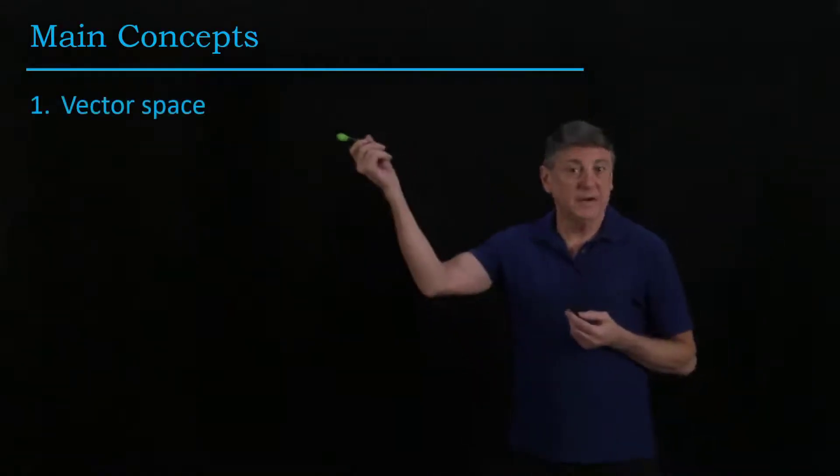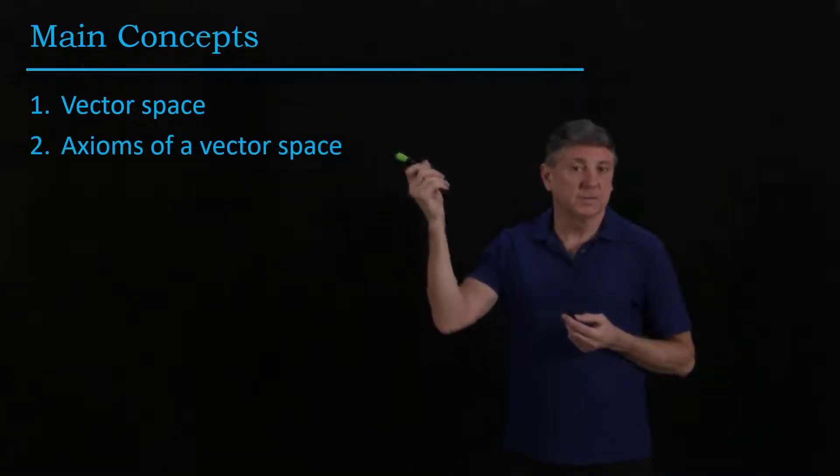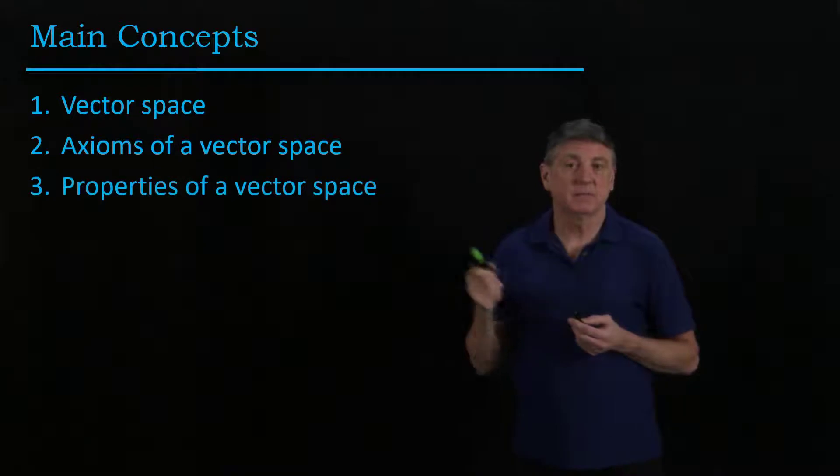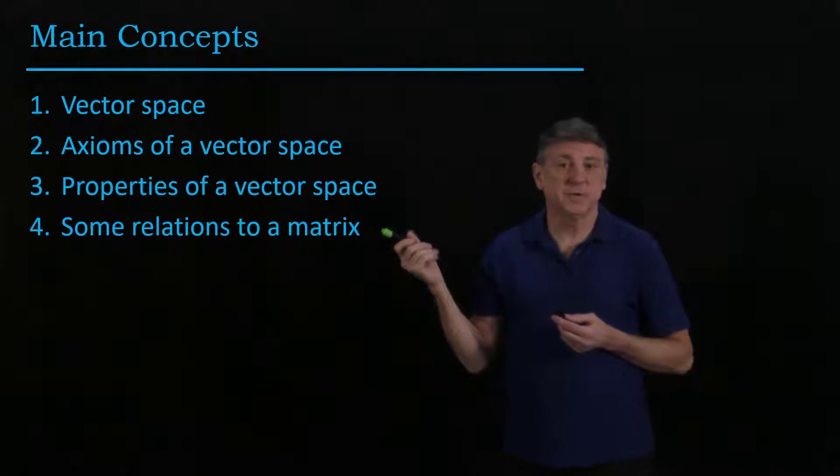The main concepts are: what is a vector space? What axioms or requirements does a vector space have to satisfy? What are some of the properties that a vector space has? And what are some of the relations to a matrix?